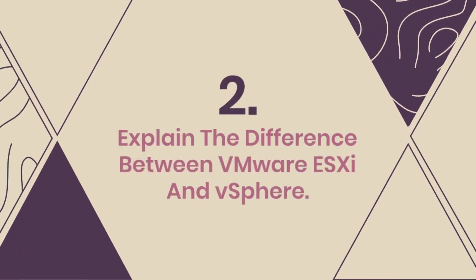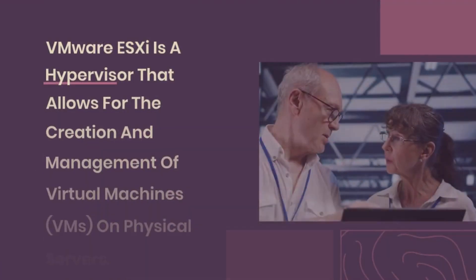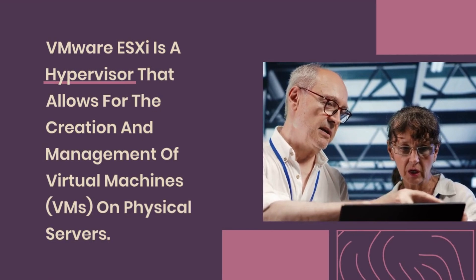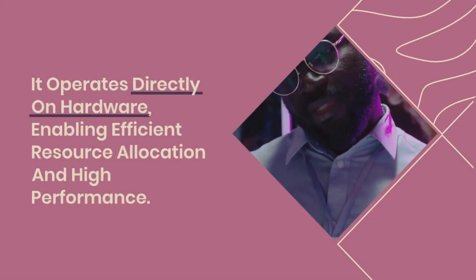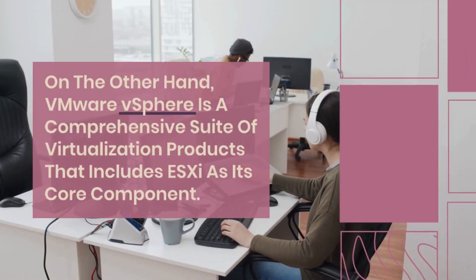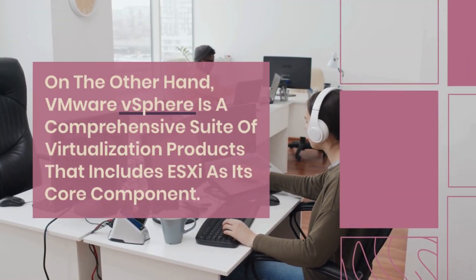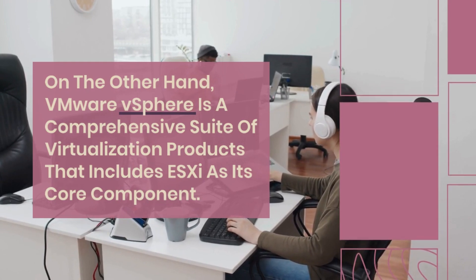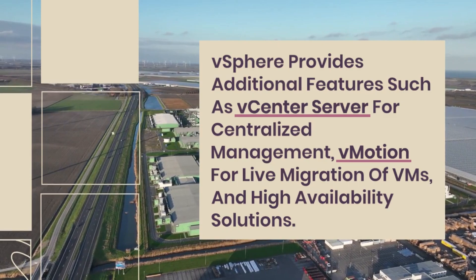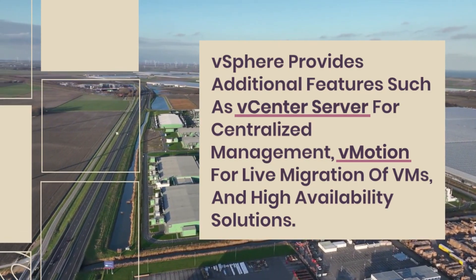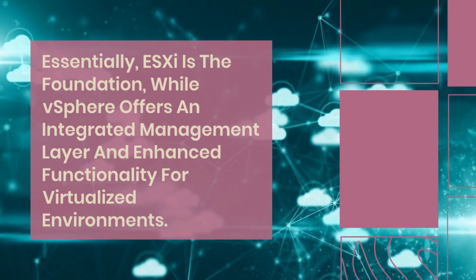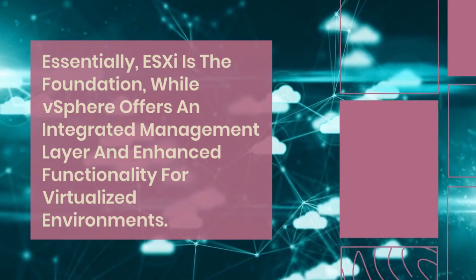Question 2: Explain the difference between VMware ESXi and vSphere. VMware ESXi is a hypervisor that allows for the creation and management of virtual machines on physical servers. It operates directly on hardware, enabling efficient resource allocation and high performance. VMware vSphere is a comprehensive suite of virtualization products that includes ESXi as its core component. vSphere provides additional features such as vCenter Server for centralized management, vMotion for live migration of VMs, and high availability solutions. Essentially, ESXi is the foundation, while vSphere offers an integrated management layer and enhanced functionality for virtualized environments.